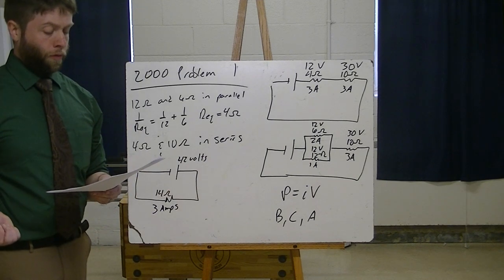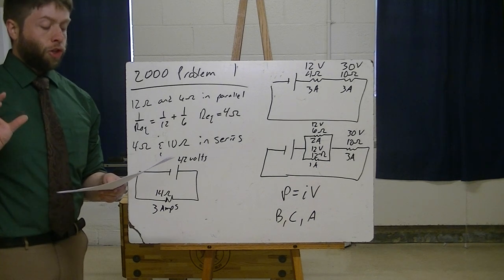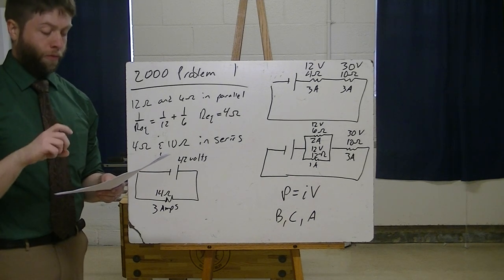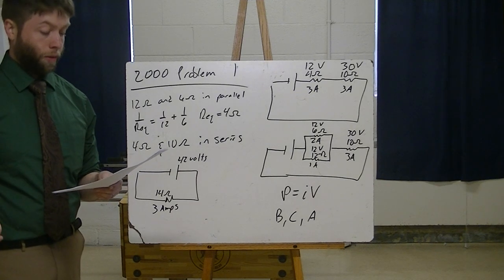So we start off with a 42-volt source. We've got a 10-ohm light bulb, a 12-ohm light bulb, a 6-ohm light bulb. It should be pretty clear that we hit the 10-ohm first, then we split, we go into the 12-ohm and the 6-ohm, so those guys are in parallel.